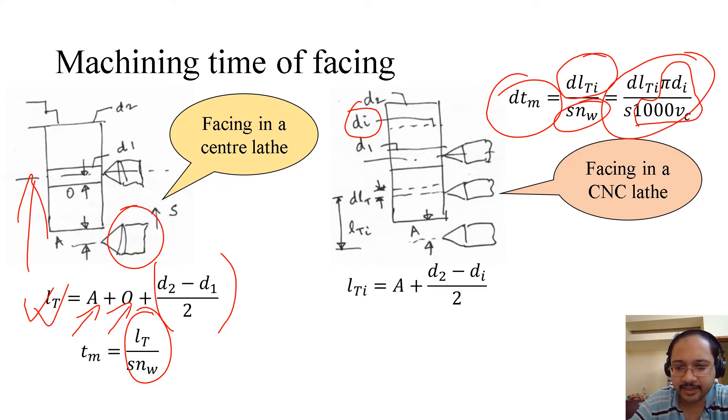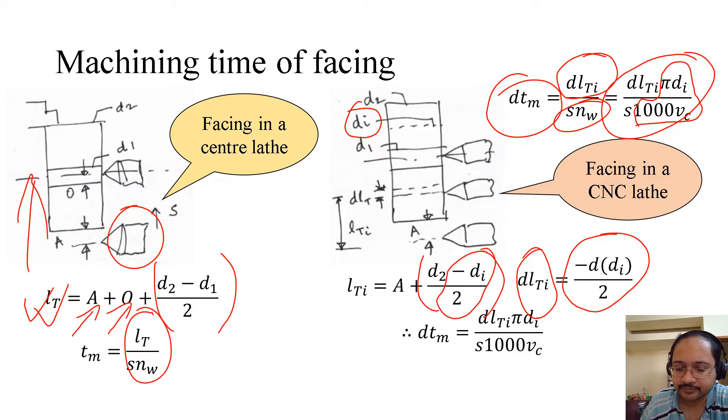Next, LTi equals to A plus (D2 minus D1) Di by 2. If we take differentiation, then dLTi equals to minus d(Di) by 2, simply taking derivative of this part. What is differential machining time? We have already found from the top.